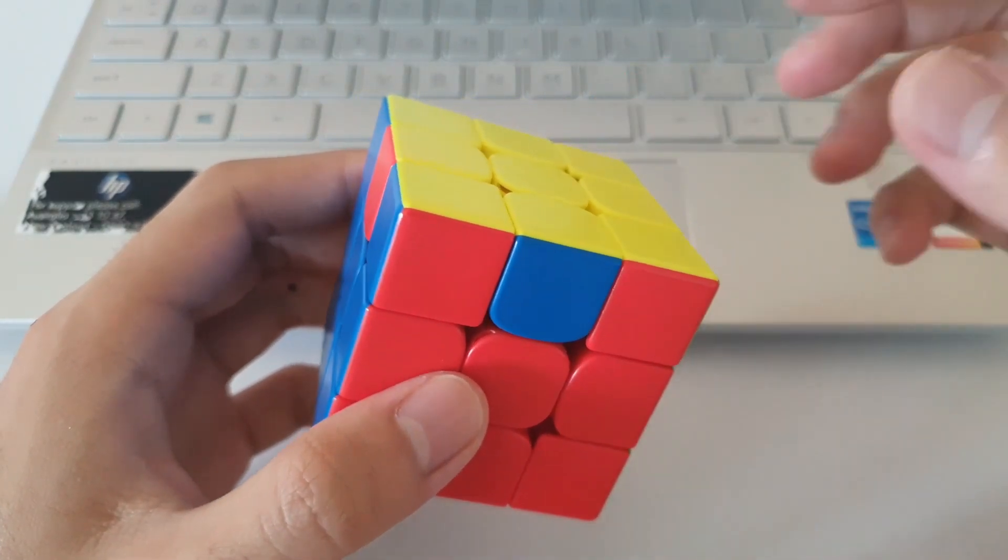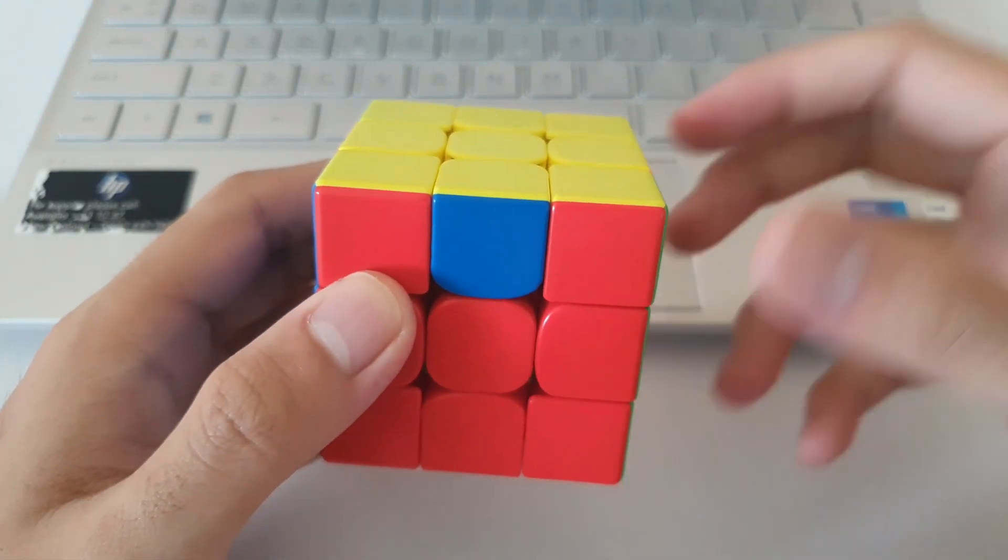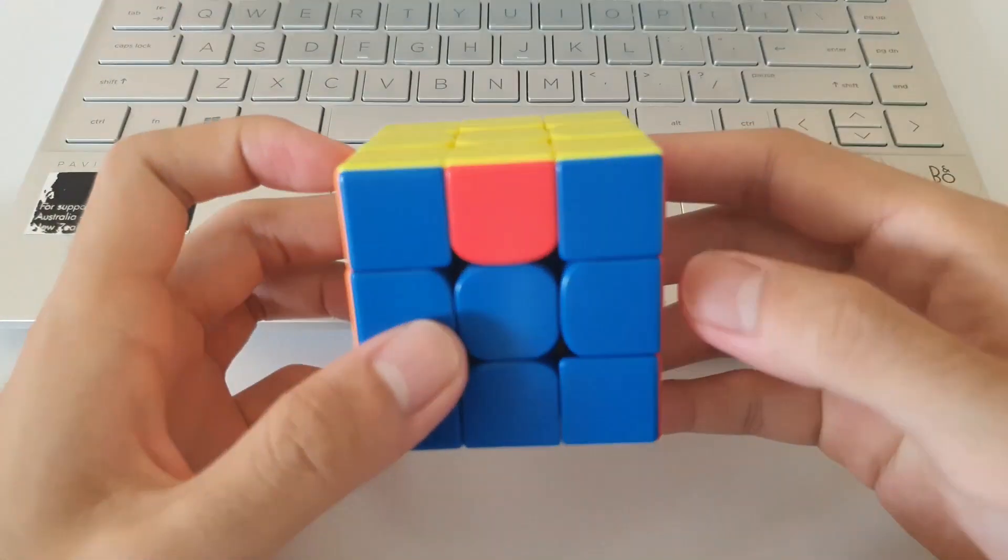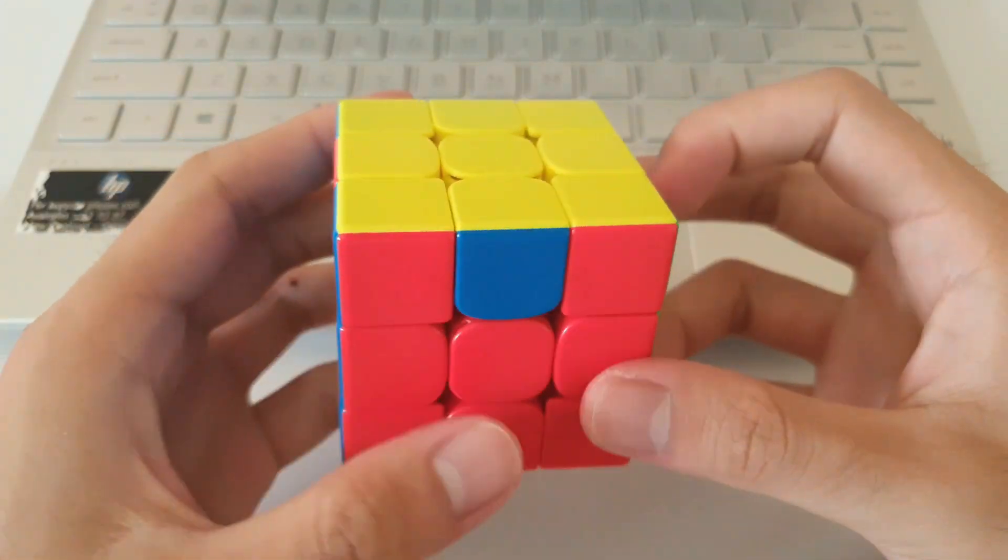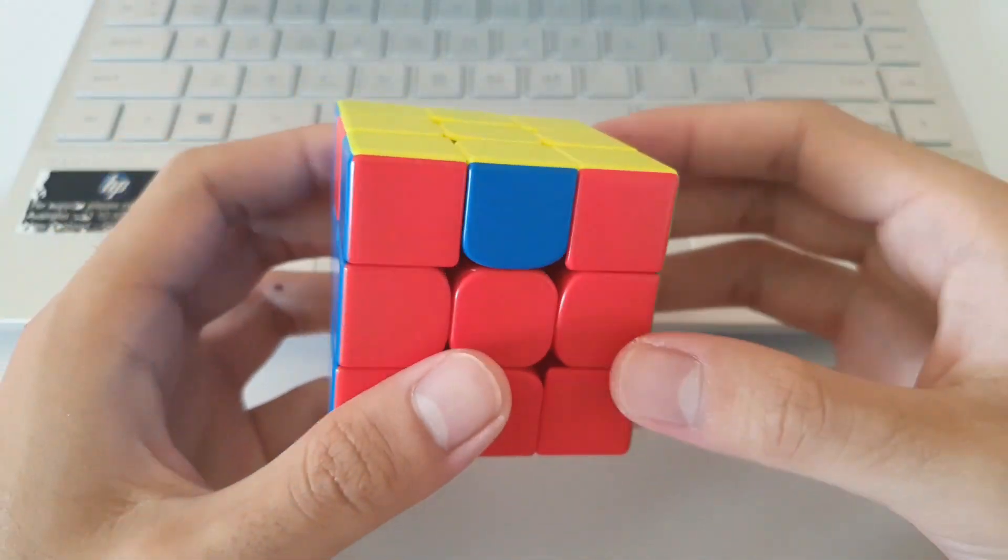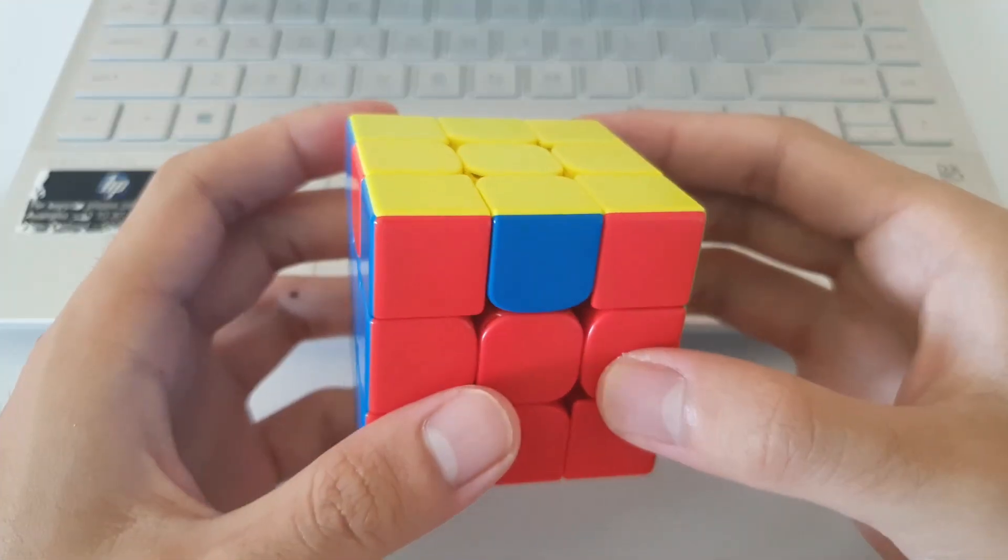The direction at which you start the algorithm also changes. If I use the M prime algorithm for example, usually I'd start from facing this way. But if I wanted to switch hands and switch over to U moves, you'd want to start off the other way. The algorithm would actually look something like this.